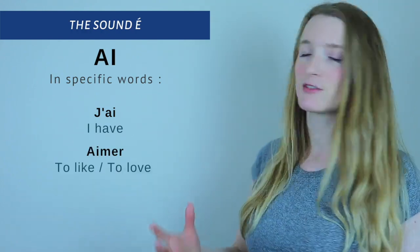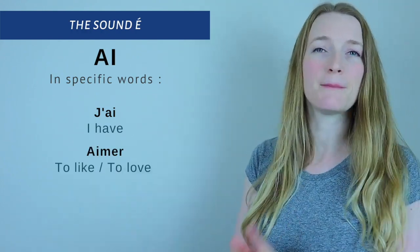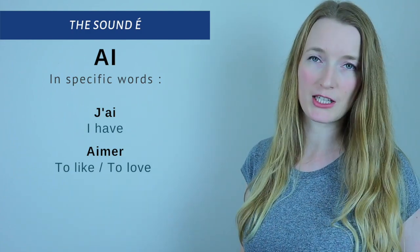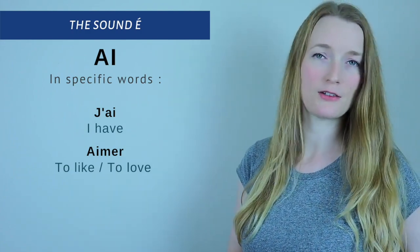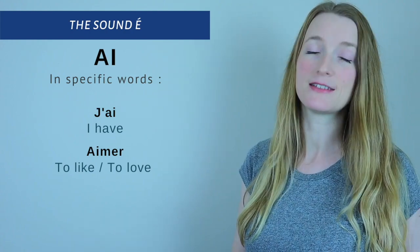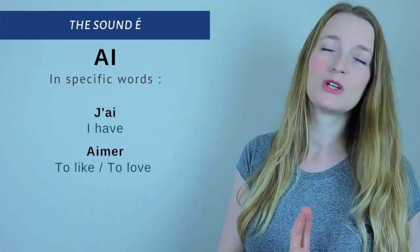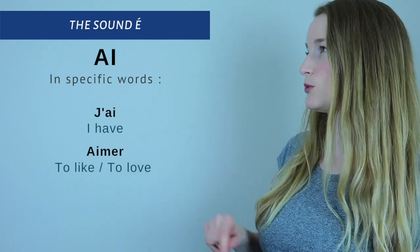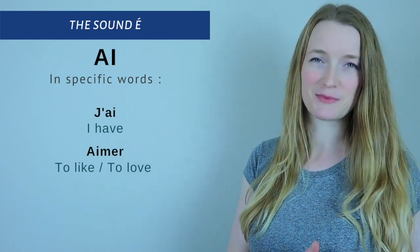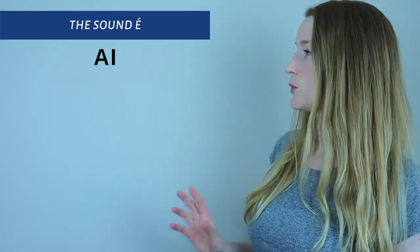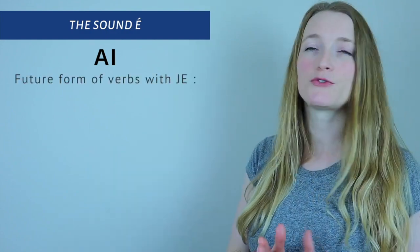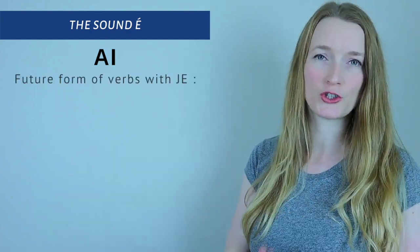When it's the infinitive of the verb, it's pronounced aimer. But when you conjugate it, for example, if you want to say I like, you can say j'aime. In this case, it's a sound É. So this one, those two, not only this one, are very specific. And then another way that we have with AI is the future form of verbs with je.